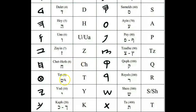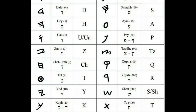The next letter, which is the ninth letter of the Hebrew alphabet, is the Tat, or what's commonly known as the Tet, which makes the T sound — as you can see in the modern, and then this is the Paleo. The next letter, the tenth letter of the Yahudiith Hebrew alphabet, is the Yod, which makes the Y sound, and this is how it looks in the modern Hebrew and the Paleo-Hebrew.